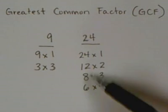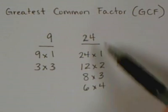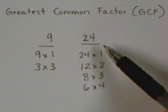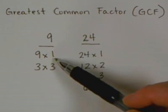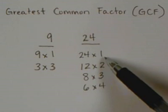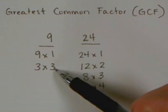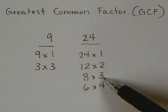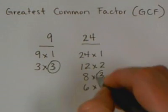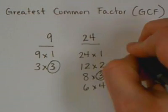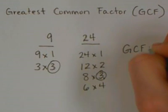So now that we have all of our factors listed, all the ways to multiply to get the top numbers, now we're going to find what the biggest number they both have listed is. Well, they both have a 1 listed, and they both have a 3 listed. So our greatest, our biggest number that they both have in common is 3. So their greatest common factor is 3.